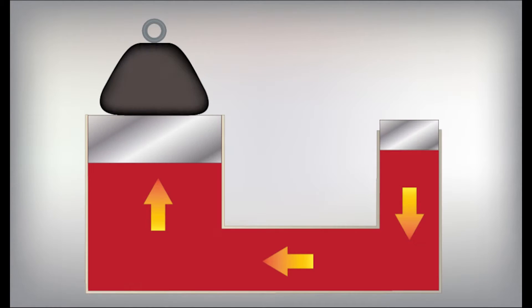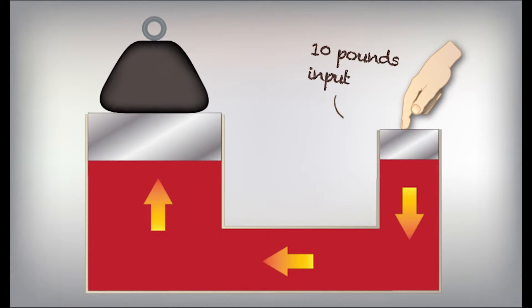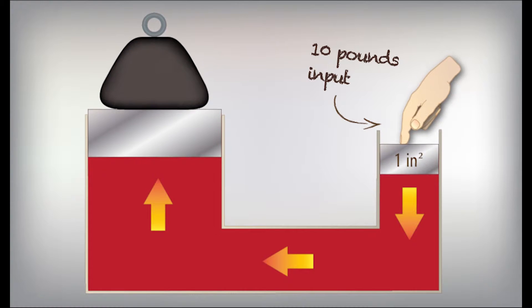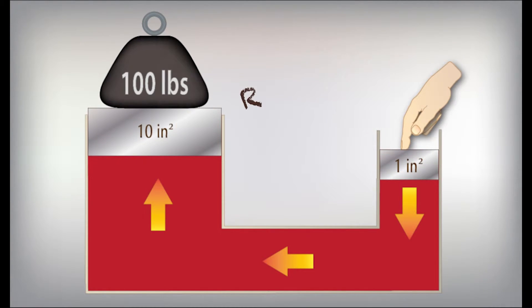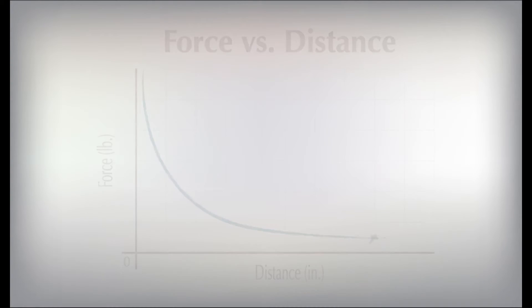Similarly, in hydraulics, 10 pounds of force on the face of a piston with an area of one square inch lifts 100 pounds on a 10 square inch piston. The multiplication of force is 10 to 1.